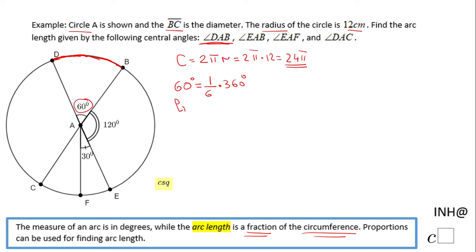So for finding the length of DB, you just have to divide this 24π by 6, or multiply by 1/6, since 60 degrees is 1/6 of 360. So that will be 4π. This is a faster way than writing a proportion when the angles are friendly. Let's go to the next angle, which is angle EAB.